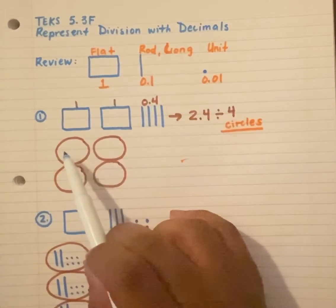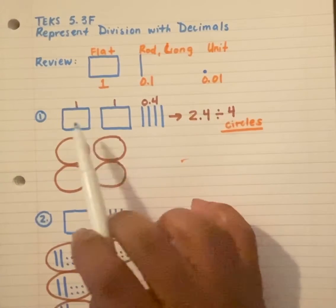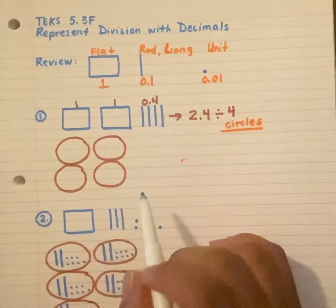So I'm going to populate each group or each circle with one rod until I reach 24 rods. Once again, I'm going to populate each group or each circle one at a time until I'm completely out of rods. And I should have 24 rods. Let's do it together.